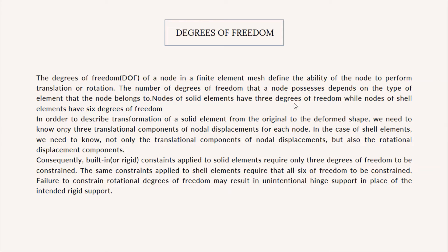To describe the transformation of a solid element from its original to a different shape, we need to know only three translational components of nodal displacement. For shell elements, we need to know not only the translational components but also the rotational displacements. Consequently, boundary or rigid constraints applied to solid elements require only three degrees of freedom to be constrained, while the same constraints applied to shell elements require all six degrees of freedom. Failure to constrain rotational degrees of freedom may result in unintentional hinges in place of the intended rigid support.